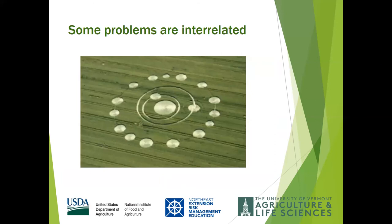Many risks are interrelated, and sometimes a practice that you implement can address several risks at once. For example, a written multi-year lease agreement that links rental rates to net farm revenue may simultaneously provide secure access to land, protect the farm from unanticipated rent increases, and help keep farm expenses in line with revenues. Another example might be implementing standard operating procedures that conform with food safety rules, which will also help the farm have clear expectations for employees to ensure a consistent quality product is brought to market.